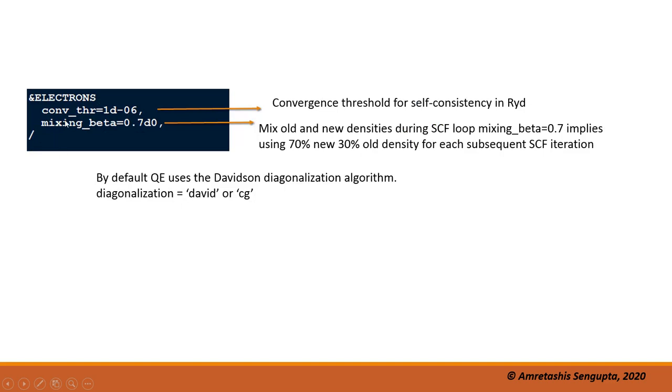You can create the input file in any text editor in Linux, or if you're more comfortable doing it with Windows and then copying it to Linux, you can use gedit or any other text editor. degauss is a value—this is the full width at maxima of the smearing. This ends the system flag, then you will have &electrons, the electrons flag. Here you put certain things to control the diagonalization algorithm. The default diagonalization algorithm is Davidson, so here I have not put any cards or flags, so it will use the default. If some flag is omitted, it takes the default values; otherwise, you can specify the value you choose accordingly.